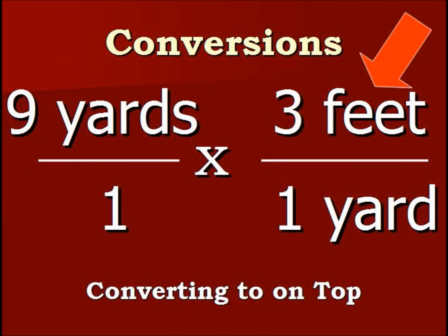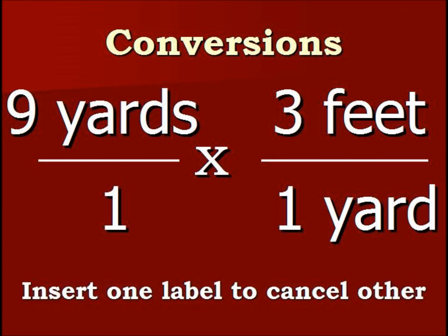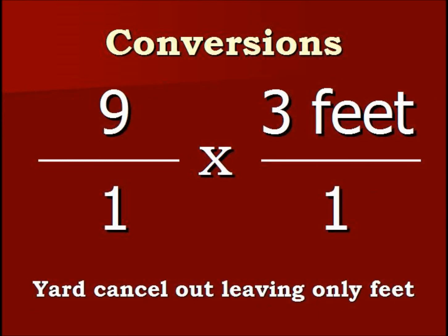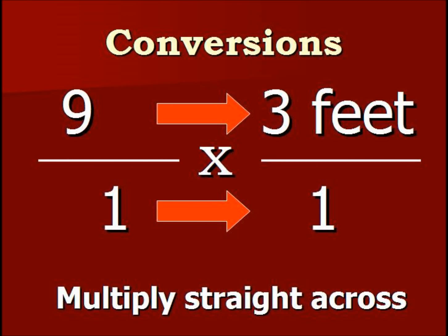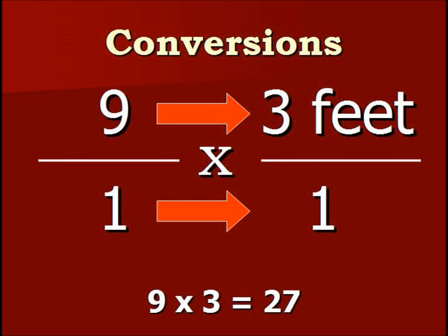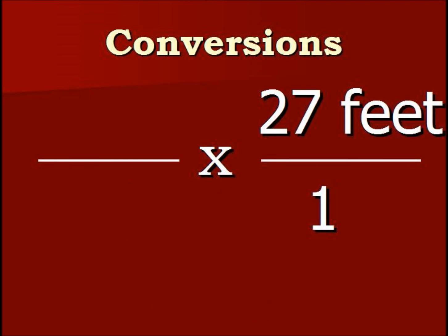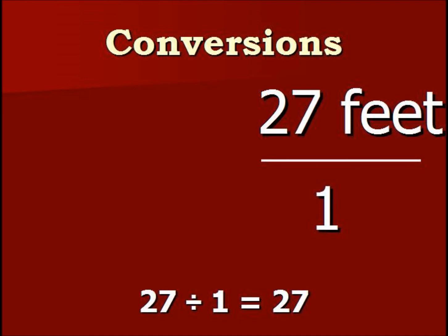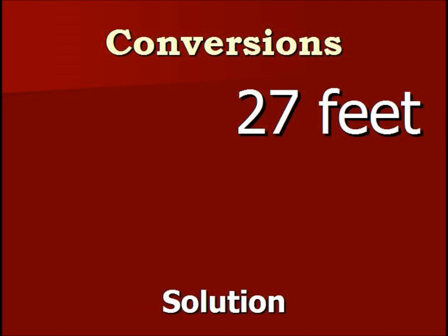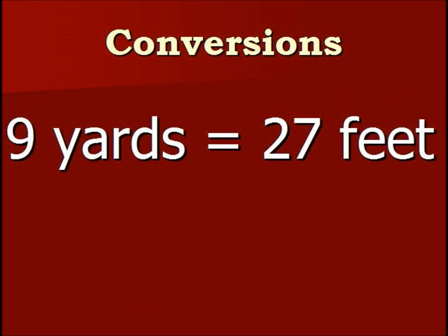We have the feet on top because that's what we're converting to. We're inserting one label to cancel out another label, so the yards cancel out, leaving us just with feet. Now we multiply straight across: nine times three is 27, one times one is just one. So we have 27 divided by one, which is just 27 feet. So nine yards equals 27 feet.